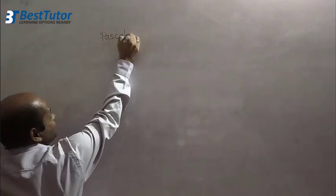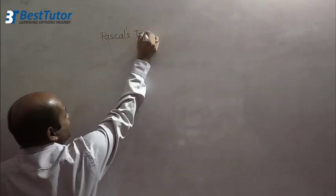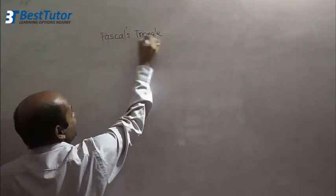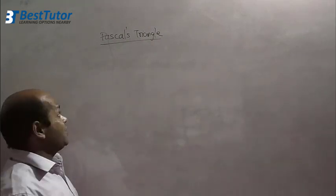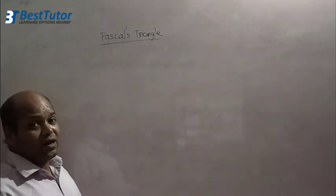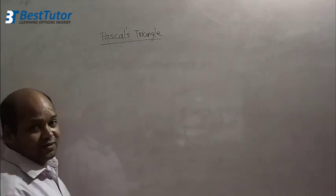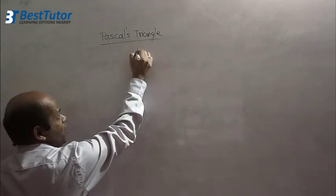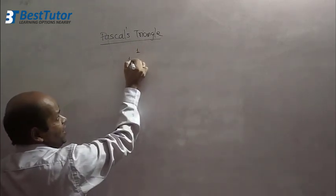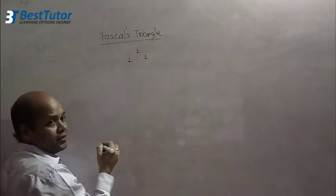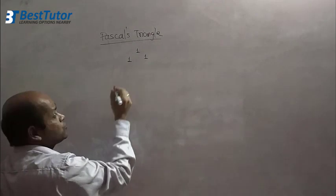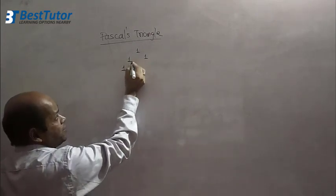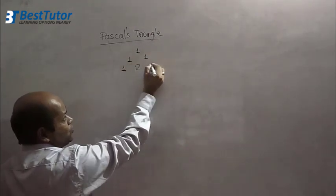Do you remember Pascal's Triangle? Something which we had studied during our school days where it is given a mathematical triangle. It starts and ends with 1. Then the adjacent digits are added together. So what we have is 1, then 1 plus 1 equals 2, and 1.